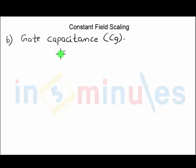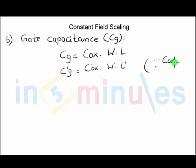We know that the gate capacitance CG is given by oxide capacitance COx into the width of the channel into the length of the channel. After scaling we know that all the parameters are going to be scaled, so let's change it. We just recently saw that oxide capacitance increases by a factor of s. Width and length we know are going to be reduced by a factor of s.